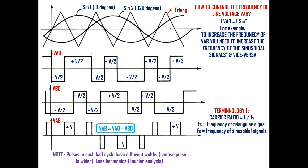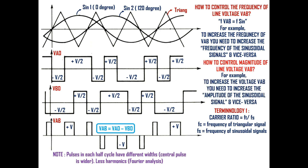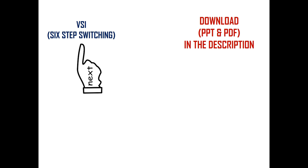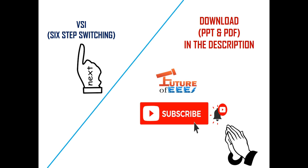The magnitude of line voltage VAB, and hence its RMS value, can be increased or decreased by increasing or decreasing the pulse width, which is controlled by the amplitude of the sinusoidal signals. Modulation index is the ratio of the amplitude of the sinusoidal signal to the amplitude of the triangular signal. So now you understand how magnitude and frequency of line voltage can be varied by varying the amplitude and frequency of the modulating signals using PWM control. In the next video we will see six-step switching in voltage source inverter. Please subscribe to the channel, have a smile, and have a good day.